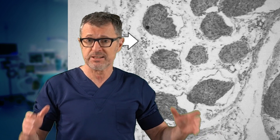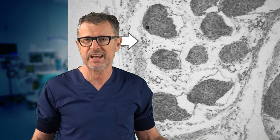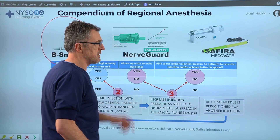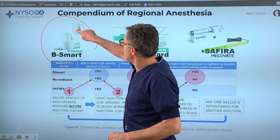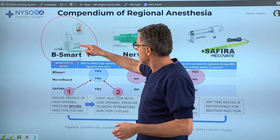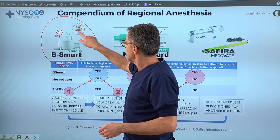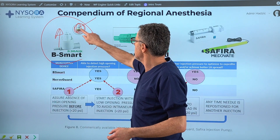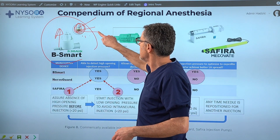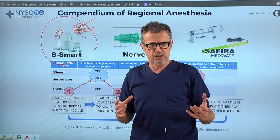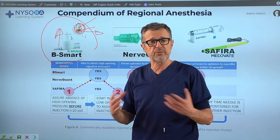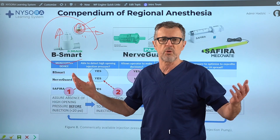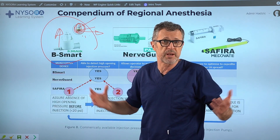With that introduction, let's look at the commercially available injection pressure monitors. There are several different devices available. First, there is the B-Smart, a device that has a piston incorporated — as pressure builds, the piston goes up and you can follow a color range. White indicates less than 15 psi; yellow indicates pressure building to 15–20 psi; and red indicates pressure over 20 psi, at which point the clinician may decide to stop the injection or continue if the needle placement is deemed appropriate on ultrasound.